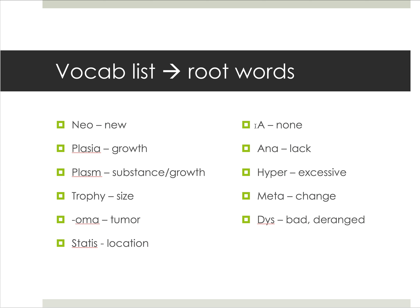'A' before something means none — so anemia is like no blood or lack of blood. 'Ana' means lack, like anaphylaxis. 'Hyper' is excessive. And 'dys' is bad or deranged. We've talked about dysplasia, which we refer to as precancerous. We'll look at some precancerous or dysplastic lesions in this chapter as well.